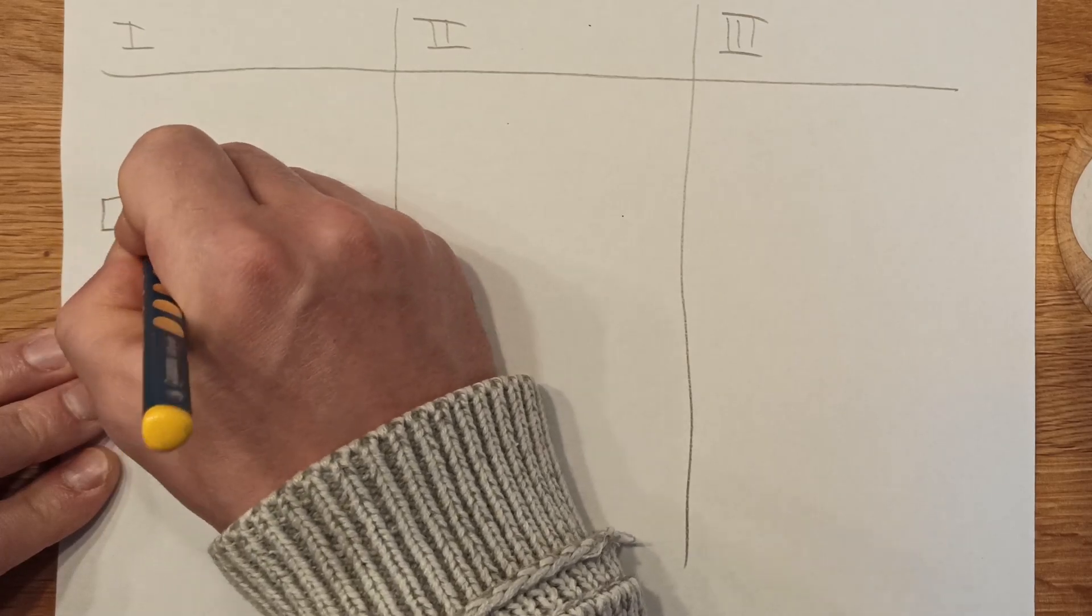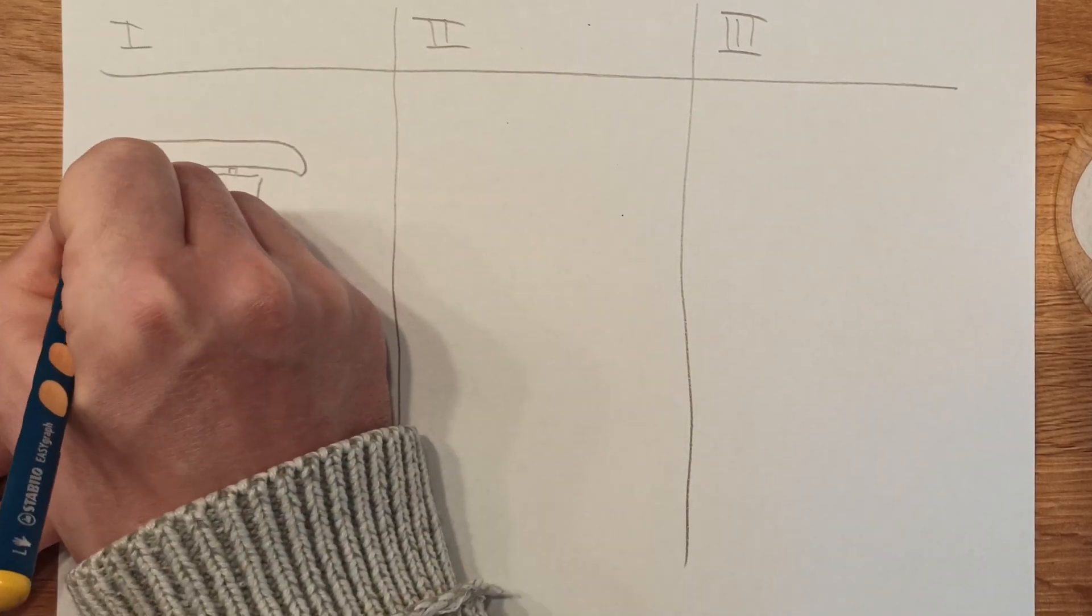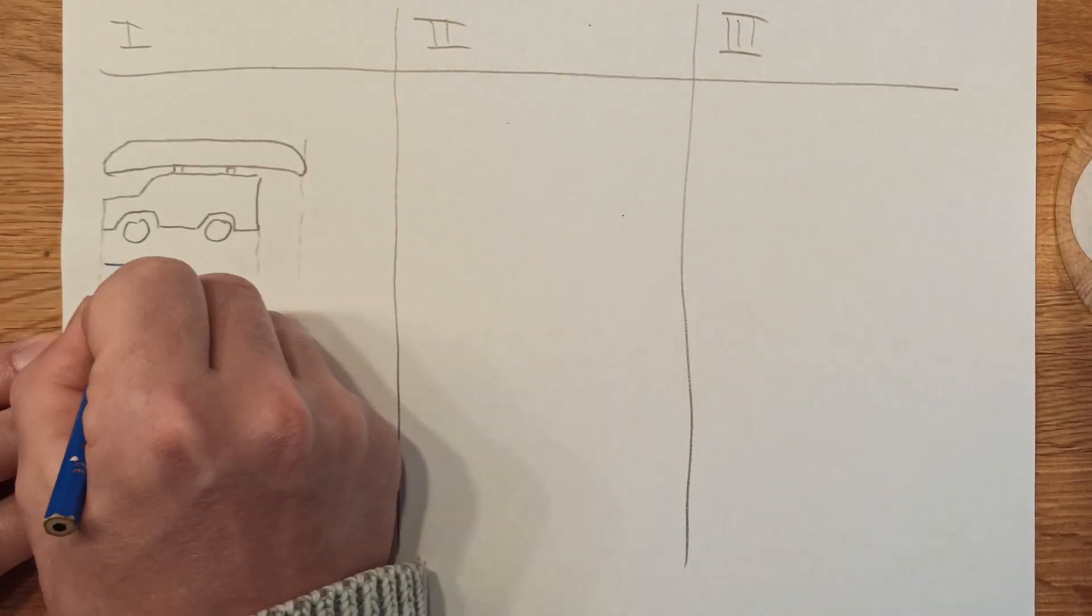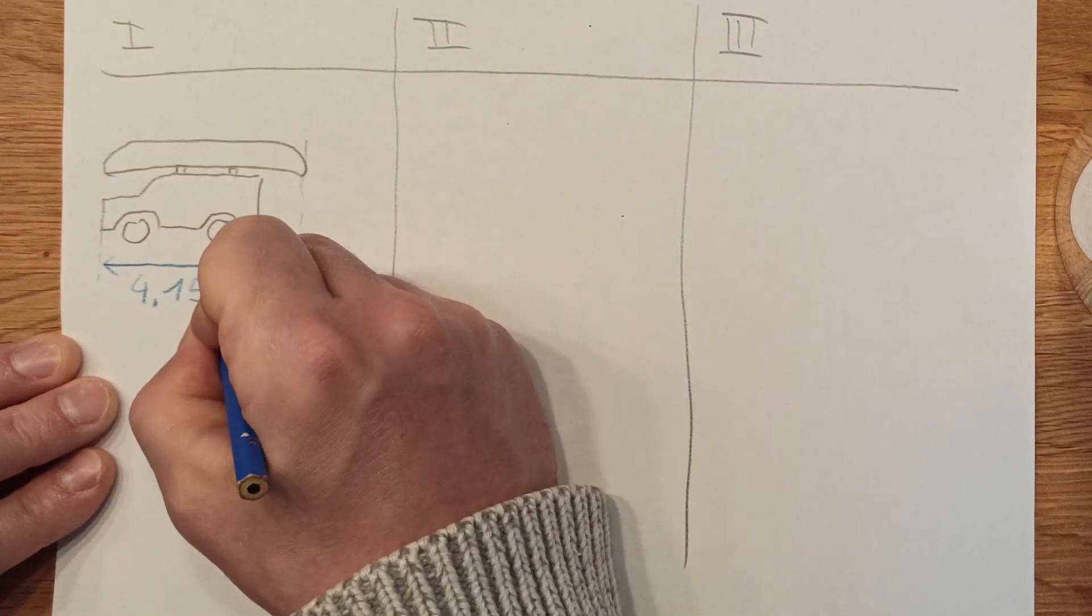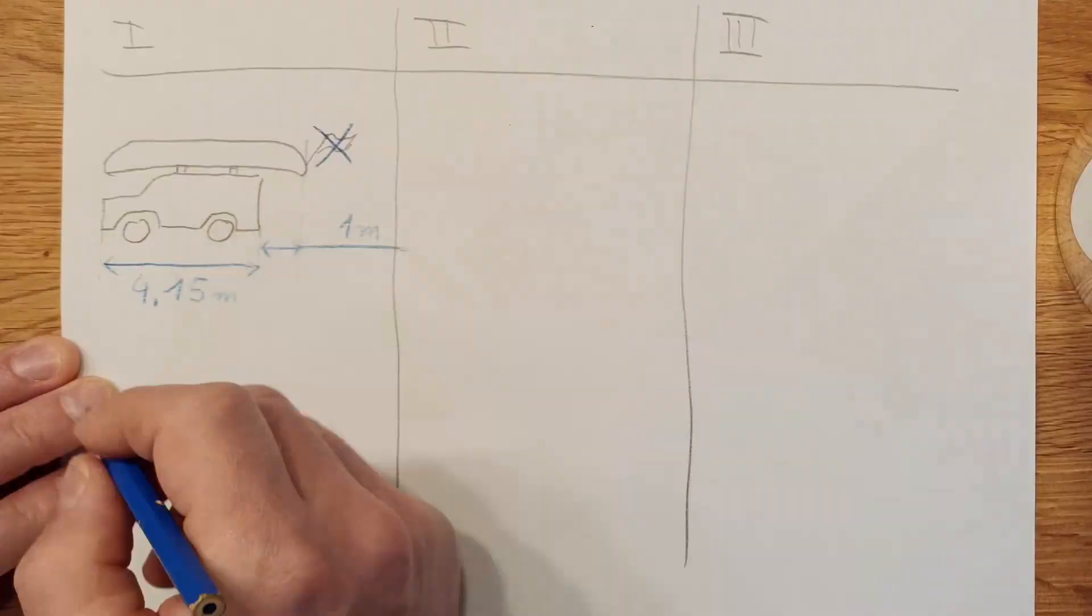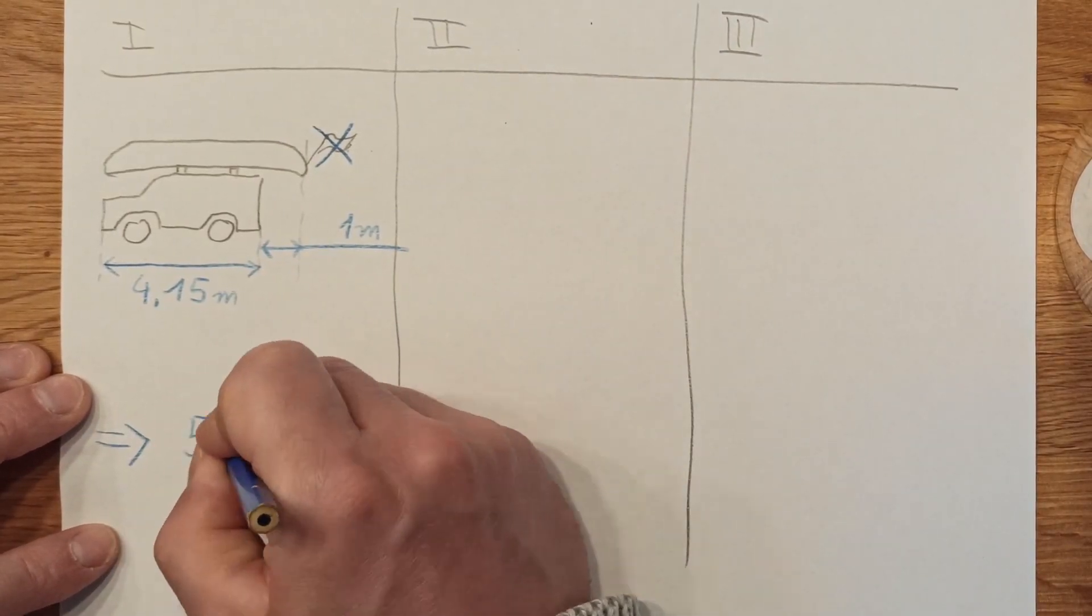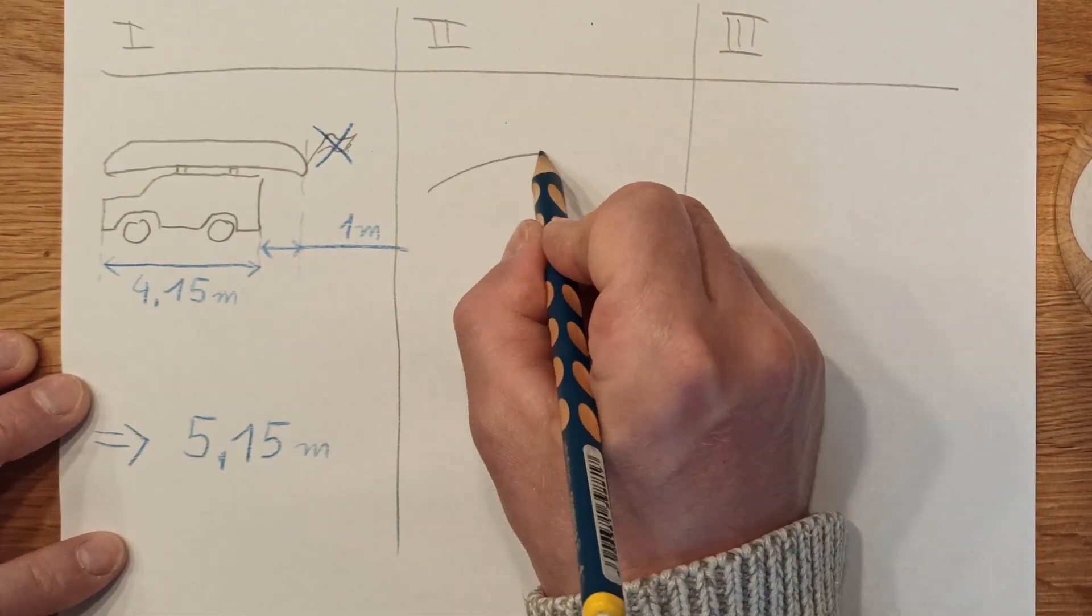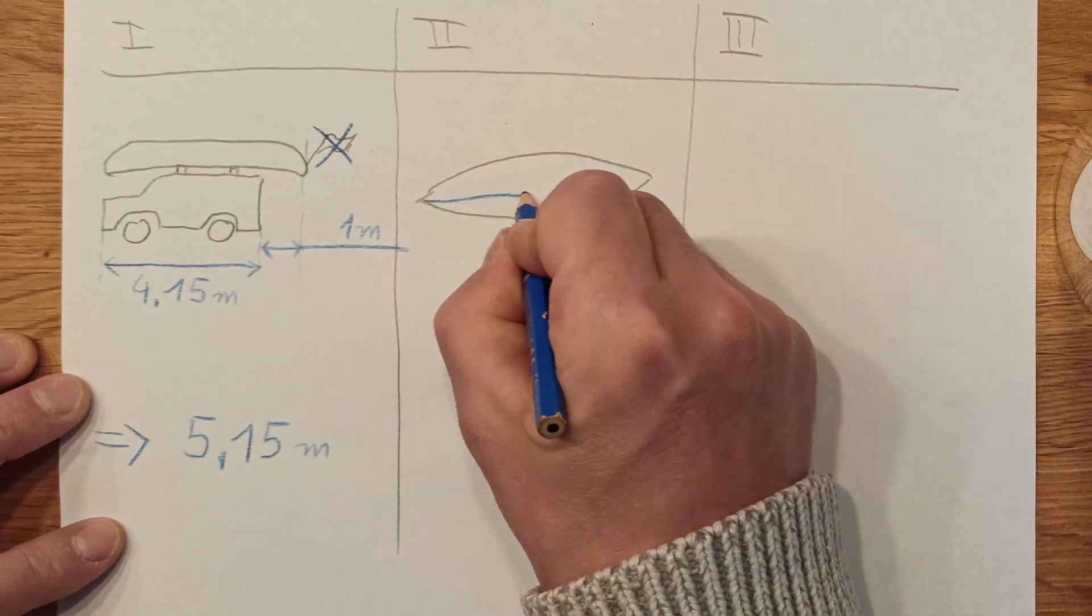And here is how I started with my canoe project. I wanted to make a canoe that we can put onto the roof rack of our car. The total length of our car is 4.15 meters. In Germany we are allowed to have an additional length of 1 meter without putting this nasty red flag to the end of it. So we have a total length of 5.15 meters.